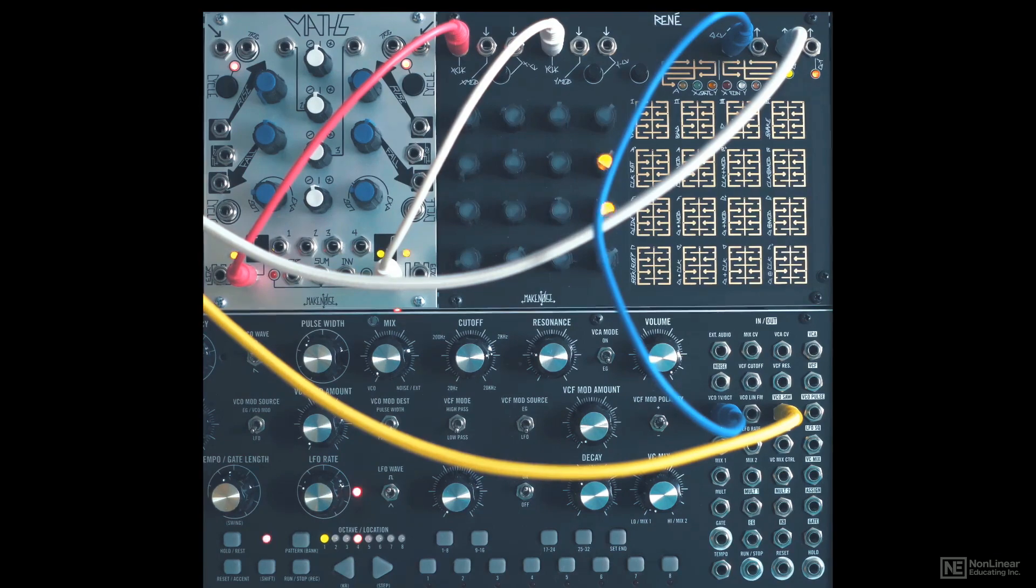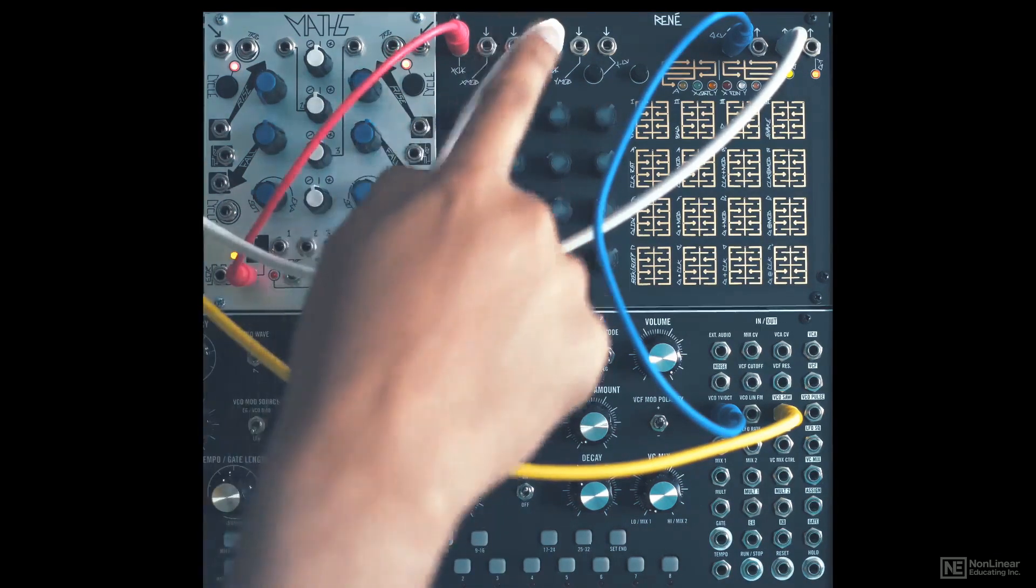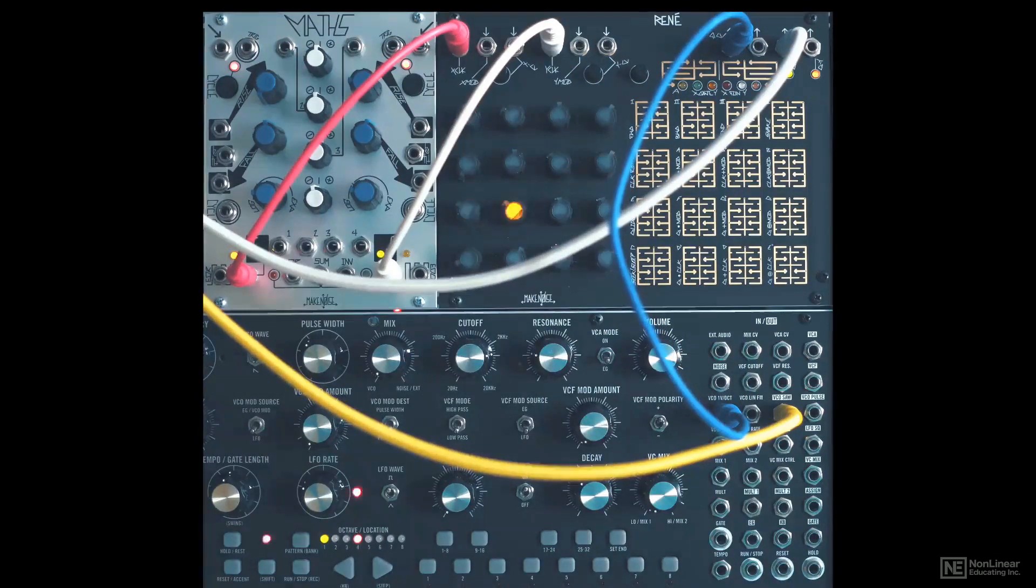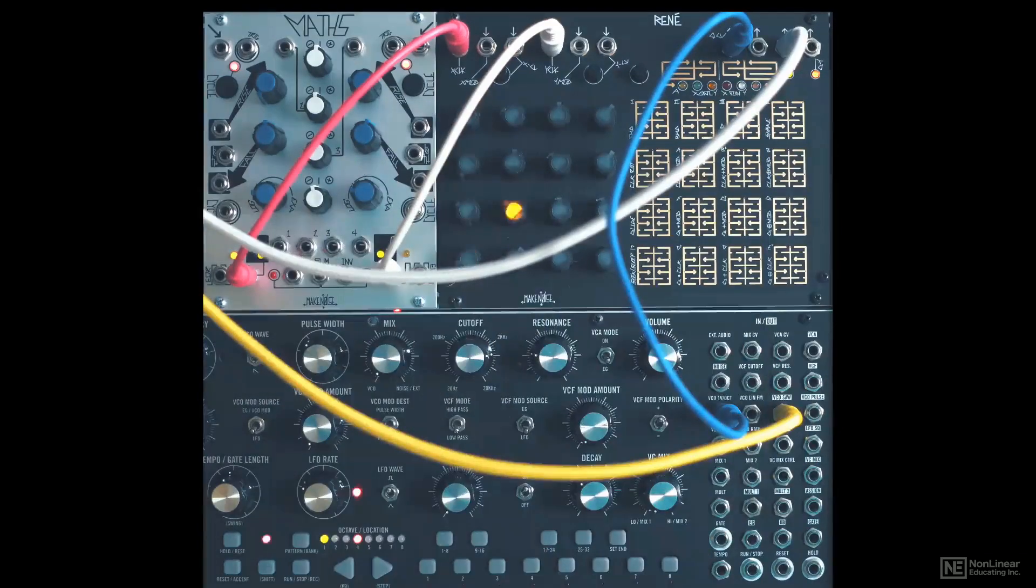We now have a single voice patch. I have a clock going into the X axis and a separate clock going into the Y axis. The quantized CV is controlling the pitch on the Mother 32 and the output is being gated with the gate X output on the Rene.